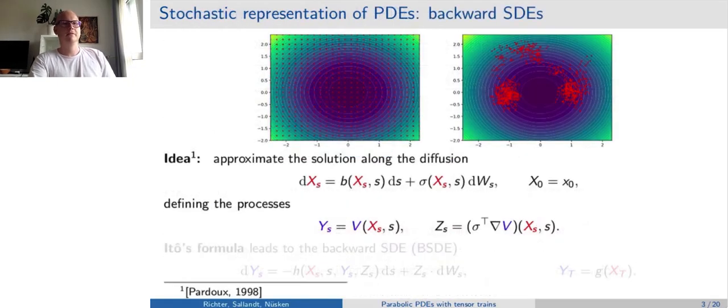This slide is about the first pillar, about the stochastic representations of PDEs in terms of backward SDEs. As a motivation, start with the left-hand side of the figure, showing the usual equidistant grid on which the solution could be obtained using a standard finite difference scheme. The problem with this approach is that the number of grid points required for a certain accuracy will scale exponentially with the dimensionality.